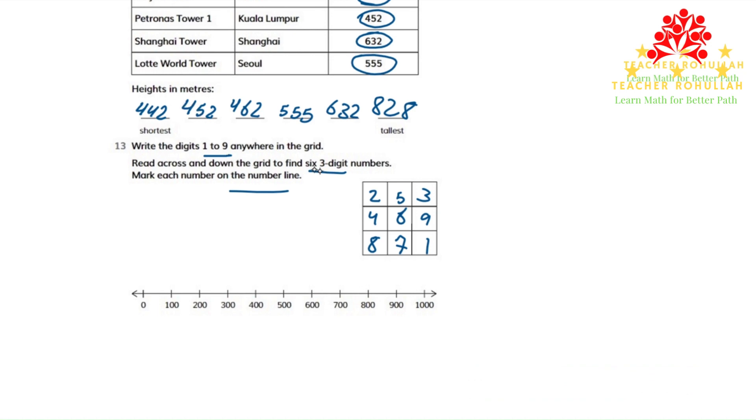And it says, read across and down. So when we read across, the first one is 253. The second one is 469. And the third one is 871.